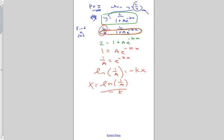So we just found out that the point of inflection occurs at the point ln 1 over A over negative k, comma L over 2.